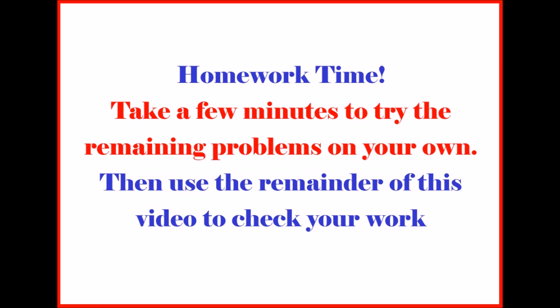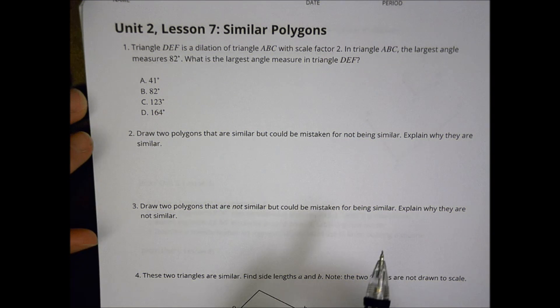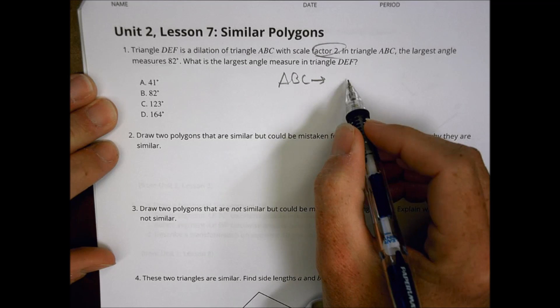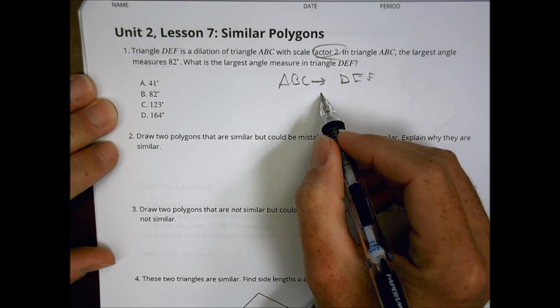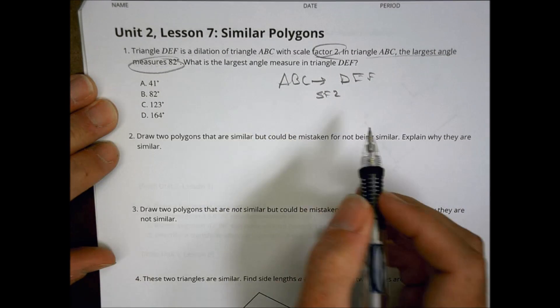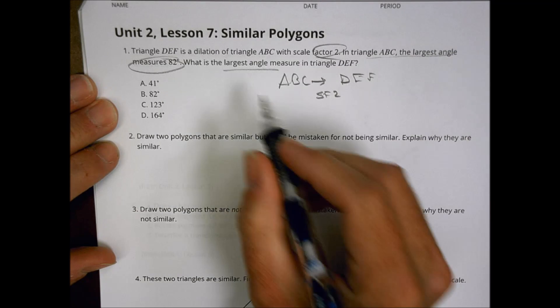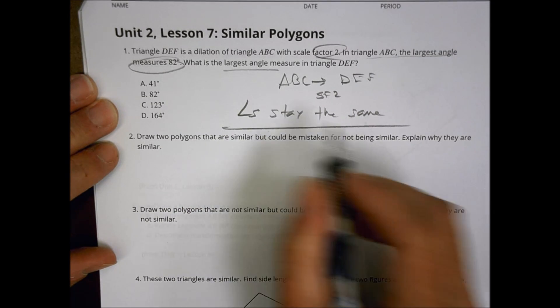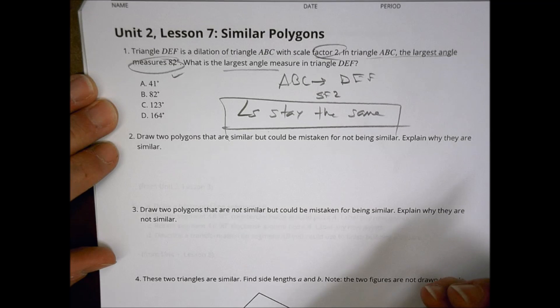So looking at tonight's homework, take a moment to pause, do your work and then come back and check it. It says triangle DEF is a dilation of ABC with a scale factor of 2. So you went from ABC and you went to then move to triangle DEF with a scale factor of 2. In triangle ABC, the largest angle measures 82 degrees. What is the largest angle measure in DEF? Remember, angles stay the same. So if the largest one in the first one is 82, our other one is going to be also 82.